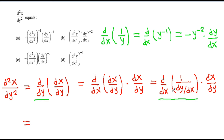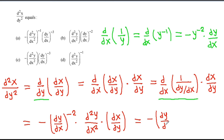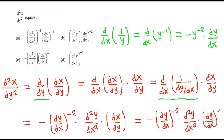Here we have dy by dx in place of y. So d by dx of 1 by dy by dx will be minus of dy by dx to the power minus 2 into d by dx of dy by dx, which will be d squared y by dx squared. We have dx by dy, and dx by dy can be written as dy by dx to the power minus 1.